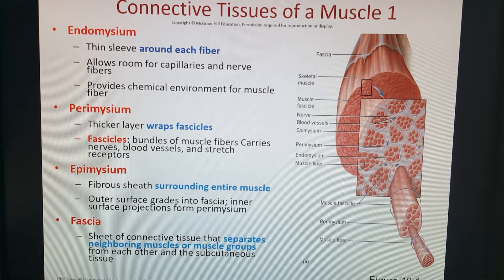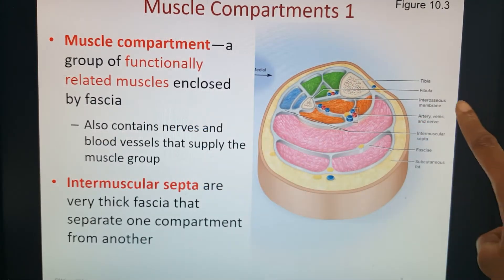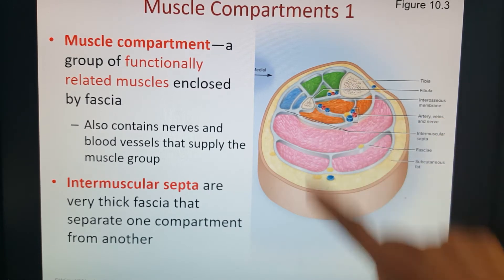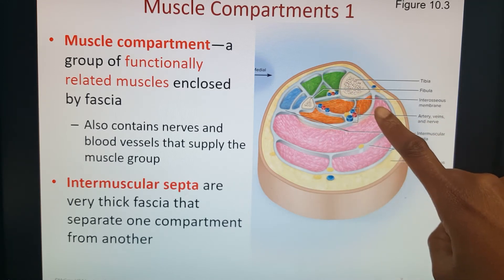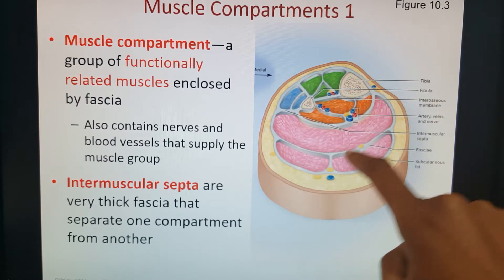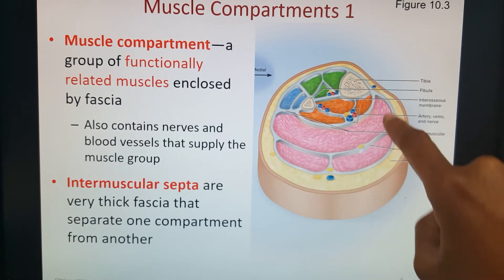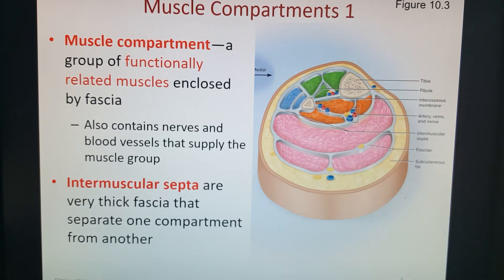In this transverse cut across the calf muscle, we have our tibia and fibula. We have four different muscle compartment groups — the pink group, orange, green, and blue. What wraps around these muscle compartments is our fascia. And then in between — for example, between the pink and the orange — this thicker portion is an intermuscular septa. Same thing between our other muscle groups.